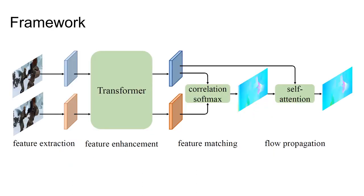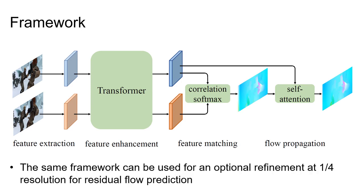Here we show our full framework. Given two input video frames, we first extract eight-times downsampled features with a thin backbone. Then the features are fed into a transformer for feature enhancement. Next, we directly compare all pairwise feature similarities, and the optical flow is obtained with the softmax matching layer. An additional self-attention layer is used for flow propagation. The framework presented so far can already achieve very competitive performance. It can be further improved by using additional higher-resolution features for refinement, where the same framework can be used in a local range.